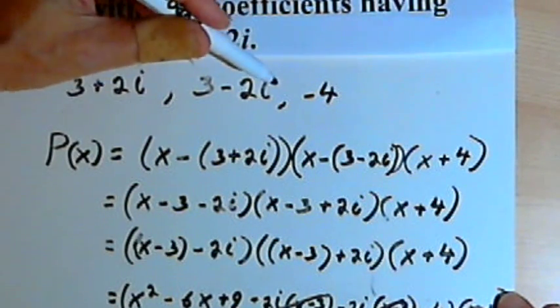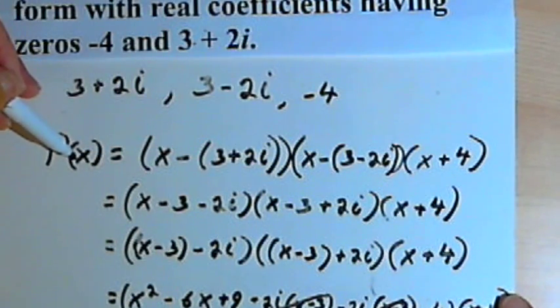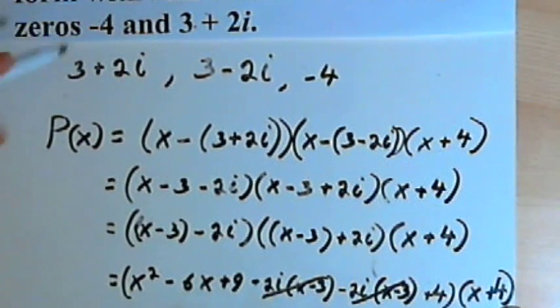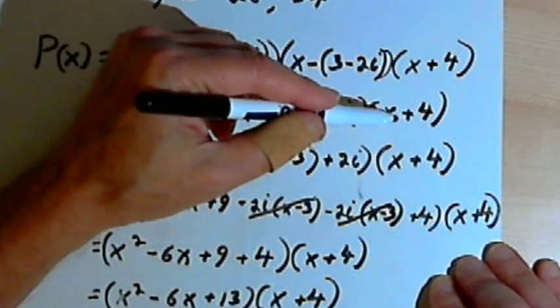Then I took those three zeros and I used them to write out the factors for the polynomial. And then the hard part really had nothing to do with the fact that this was the conjugate zeros theorem. It just had to do with the fact that we had to multiply all of this out.